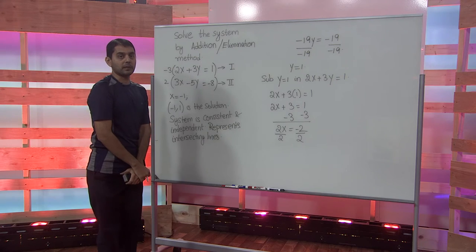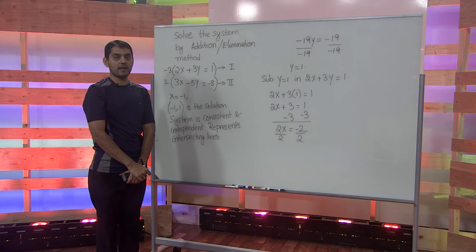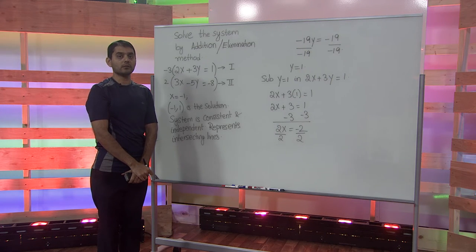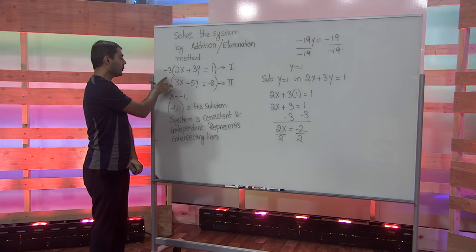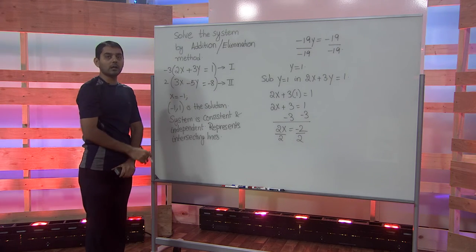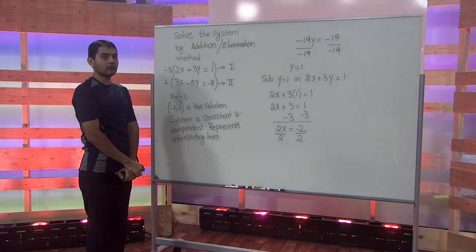To summarize, we considered a system of linear equations and solved it using the addition method. The coefficients of the variables in the given system were not opposite, so by multiplying with suitable constants, we made the coefficients opposite and then solved for the variables.